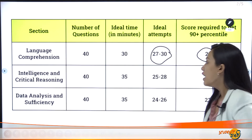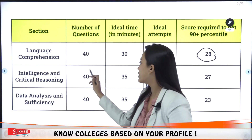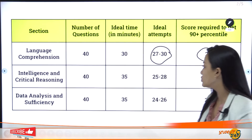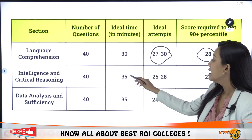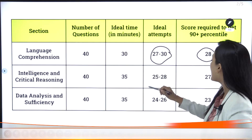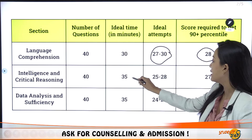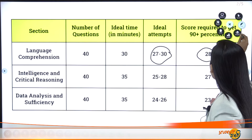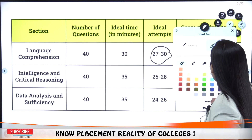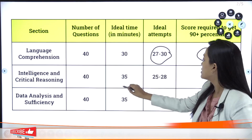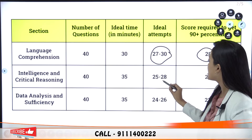The second section is Intelligence and Critical Reasoning. If we talk about this section, the time allotted is 30 minutes, and you need to manage your attempts carefully within that duration.